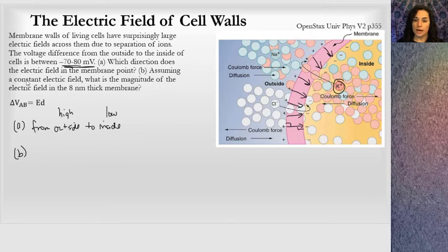It says, assuming a constant electric field, which is an approximation over this small 8 nanometer thick membrane, it's approximately constant through there. It says, what is the magnitude of that electric field?